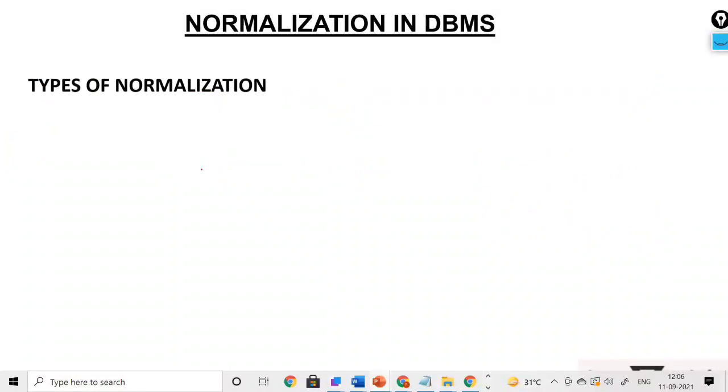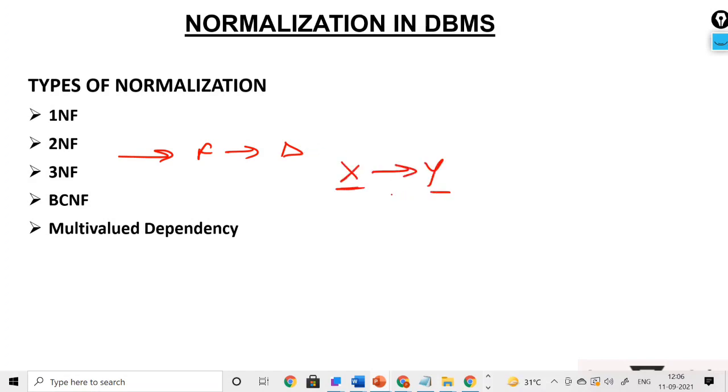The types of normalization you will be understanding in upcoming videos are first normal form, second normal form, third normal form, and Boyce-Codd normal form, also known as BCNF. We also have multivalued dependency, because till now we are understanding a dependency which is a single FD, suppose X to Y. These are attributes depending one-to-one.